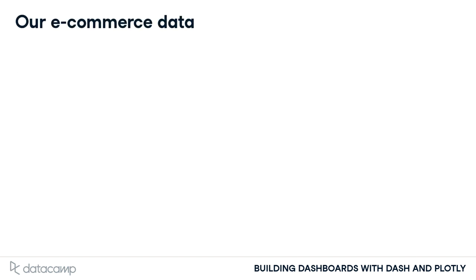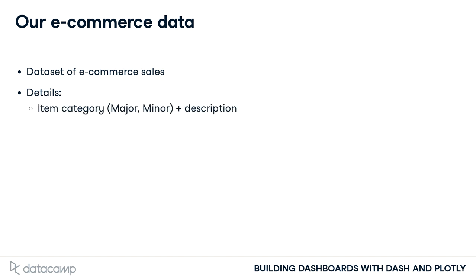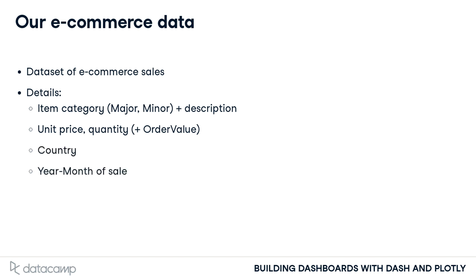Throughout this course we will use a dataset of e-commerce sales. Each row is a sale, and it contains a number of informative columns related to the sale, including the item category at both a major and minor level and text description, the price of the item, quantity ordered and therefore total order value, the country of purchase, and the year and month of sale.